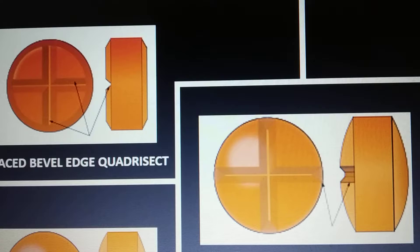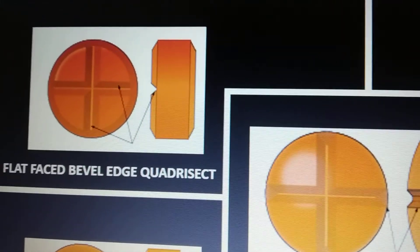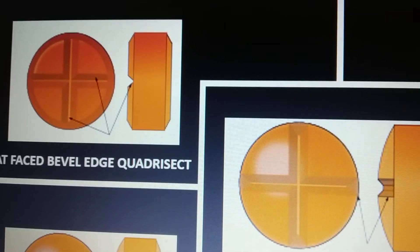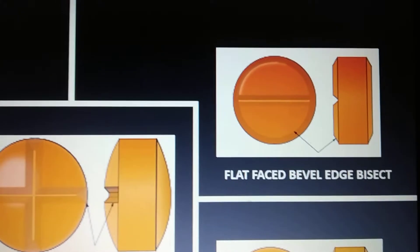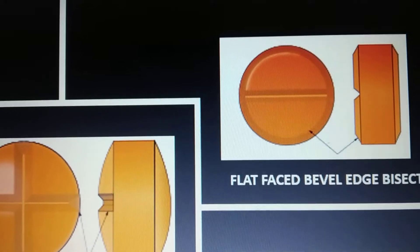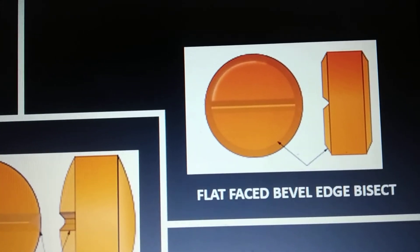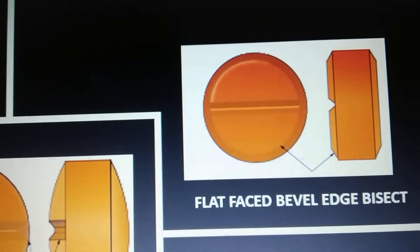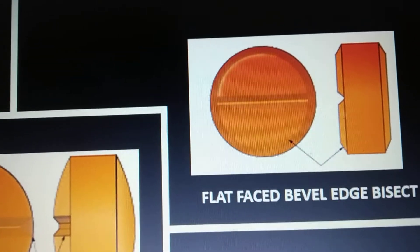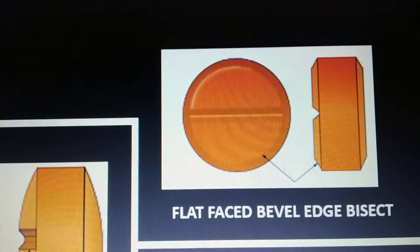Further, these shapes are classified depending on the nature of the break line. There can be one or two break lines on the tablet. Depending on the number of break lines and the nature or depth of the break line, the tablets are further classified. The first one is flat face bevel edge bisect — as you can see there is a single break line, that's why the tablet is called bisect, and the basic shape is flat face with bevel edge. Such a tablet is called a flat face bevel edge bisect tablet.